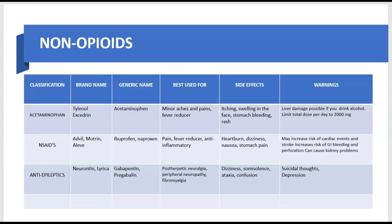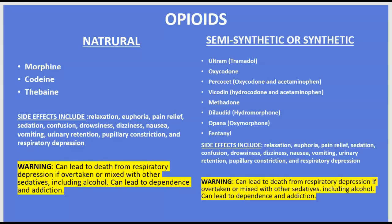We also have anti-epileptics. The ones used here for pain include Neurontin and Lyrica, otherwise known as gabapentin and pregabalin. These are best used for post-herpetic neuralgia, peripheral neuropathy, or fibromyalgia. You'll often see these prescribed for patients with diabetic complications causing neuropathy in their hands or feet, and also for patients who develop neuropathy after chemotherapy treatment. You have to be careful with these medications because some adverse effects can include suicidal thoughts and depression.